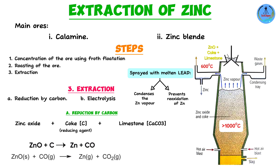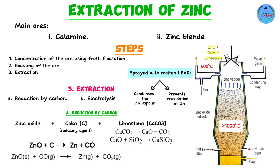Returning to the mixture fed into the furnace — zinc oxide, coke, and limestone — what is limestone's role? Limestone (calcium carbonate) decomposes at high furnace temperatures to form calcium oxide (CaO) and carbon dioxide (CO₂). The calcium oxide then combines with silica (silicon dioxide, SiO₂), a common ore impurity, to form calcium silicate, which is removed as slag — a waste product.